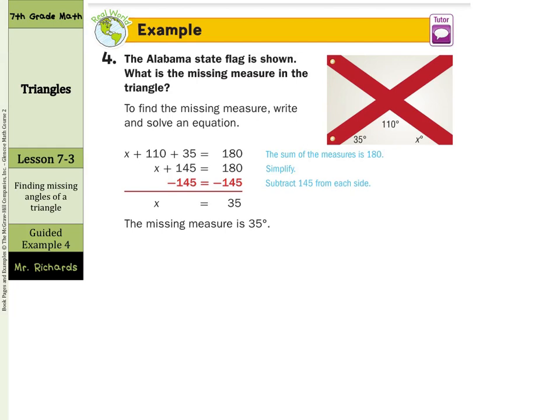In this example we have the Alabama state flag. And we're looking for the missing measure of the angle in the triangle. Well we write and solve the equation where we have x plus 110 plus 35 equals 180 degrees. They combined 110 plus 35 to get 145. Subtracted 145 from both sides to get x equals 35 degrees.